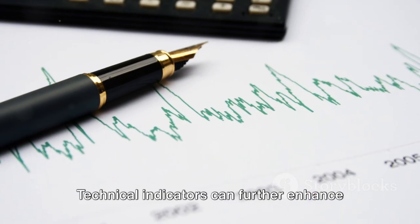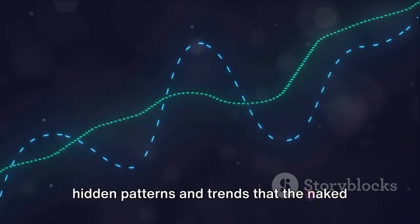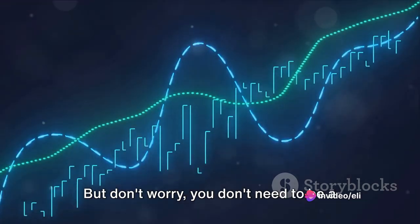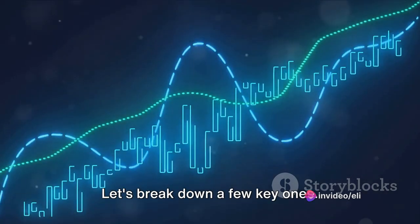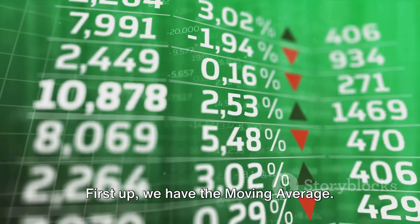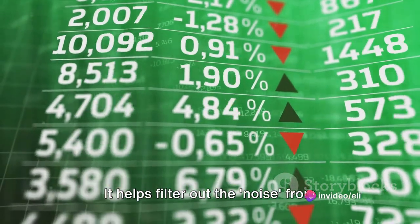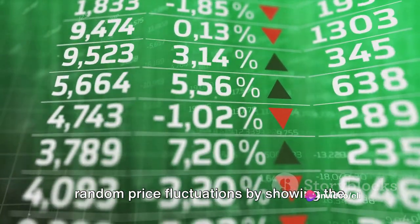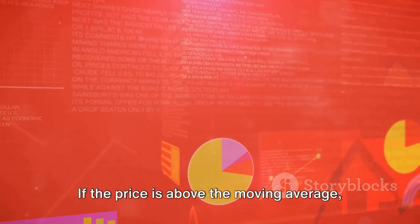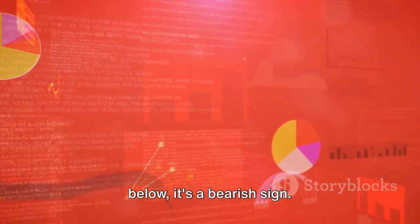Technical indicators can further enhance your understanding of the market. They're like secret codes, revealing hidden patterns and trends that the naked eye might miss. But don't worry, you don't need to be a cryptographer to understand them. Let's break down a few key ones. First up, we have the moving average. Think of it as the smooth operator of indicators. It helps filter out the noise from random price fluctuations by showing the average price over a certain number of periods. If the price is above the moving average, it's generally a bullish sign. And if it's below, it's a bearish sign.